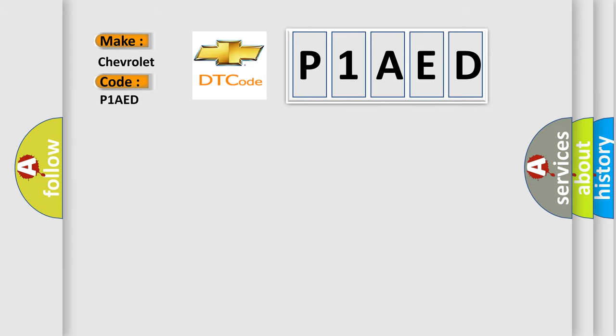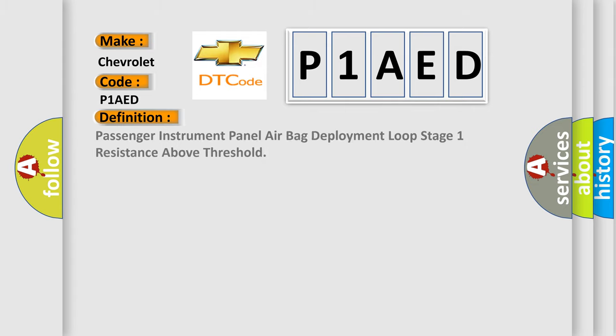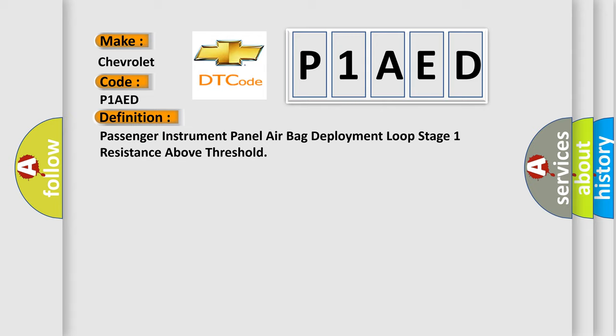The basic definition is: Passenger instrument panel airbag deployment loop stage 1 resistance above threshold.